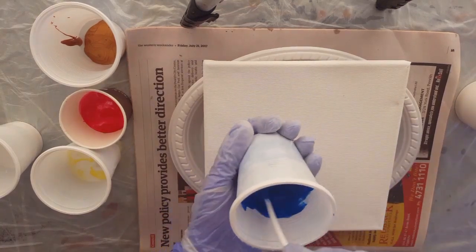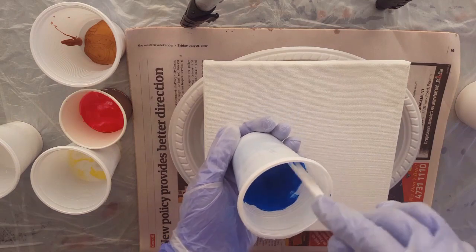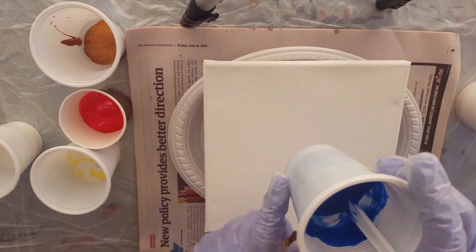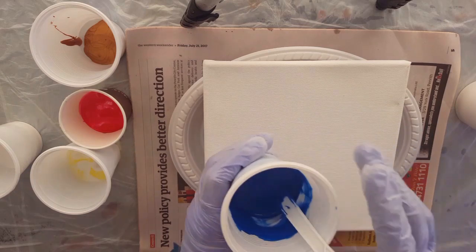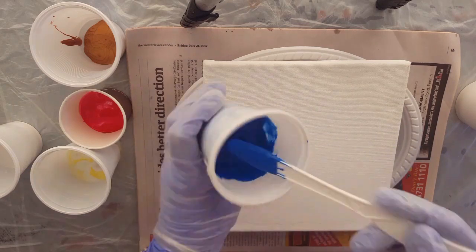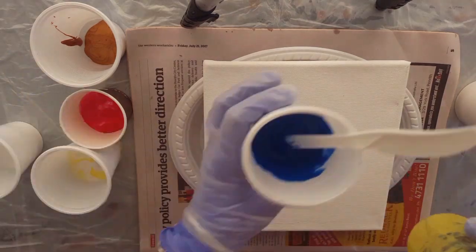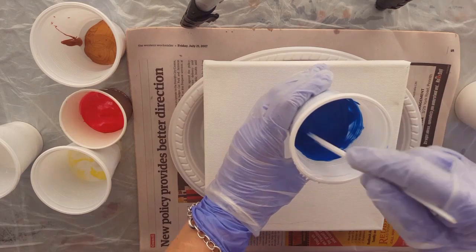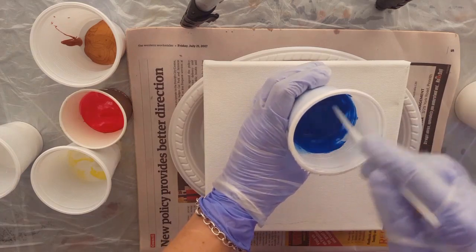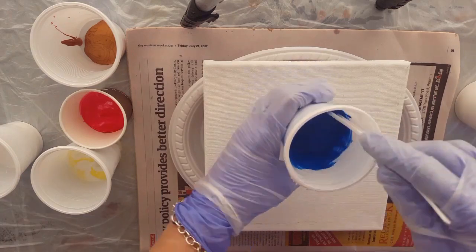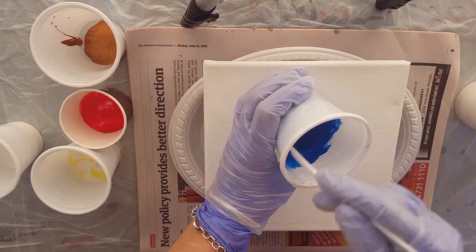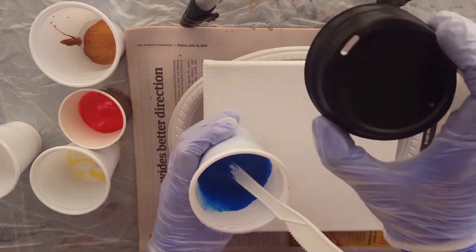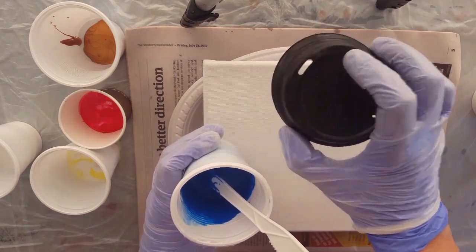So I've got one part paint, one part Floetrol, and one part PVA glue. So it's still pretty thick and I just have a little bit of water in here, so I'm just going to add bit by bit to get it to the right consistency.